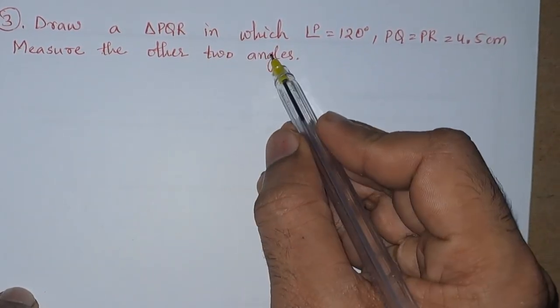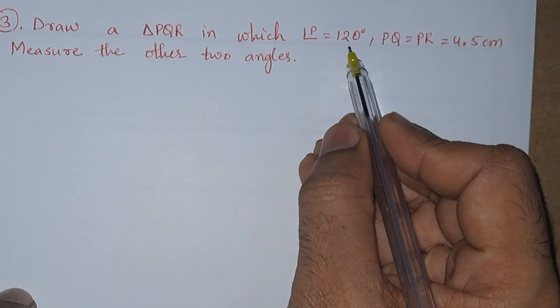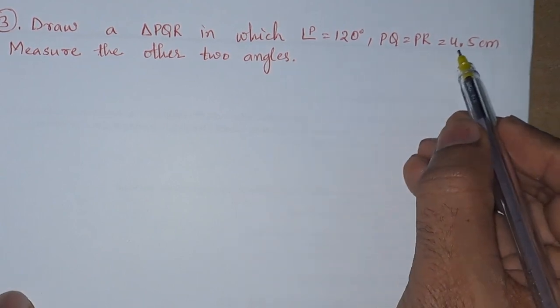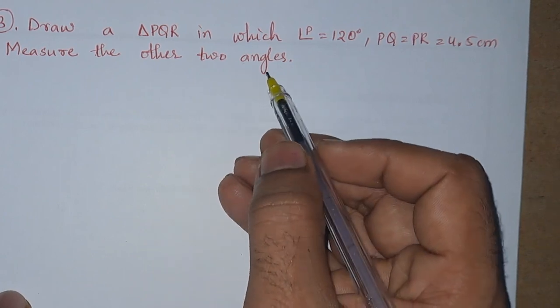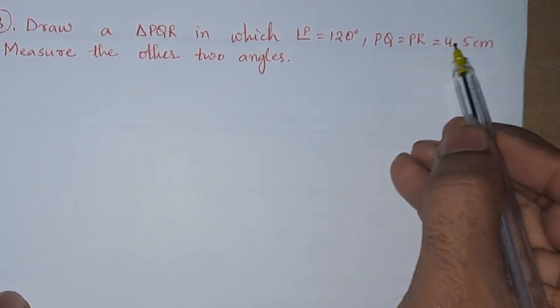Third problem: Draw a triangle PQR in which angle P equals 120 degrees, PQ equals PR equals 4.5 centimeters. Measure the other two angles. So they have given the two sides PQ and PR.